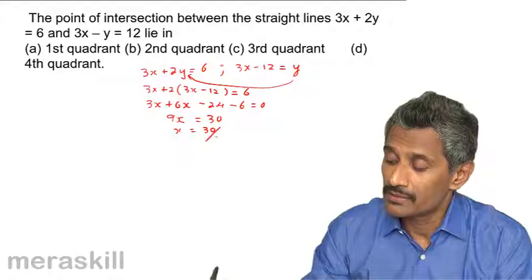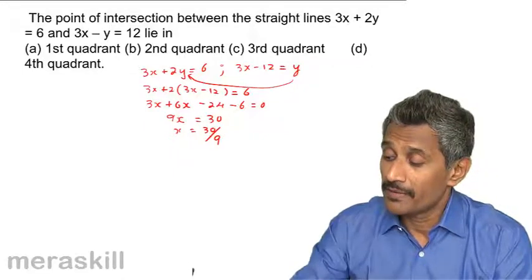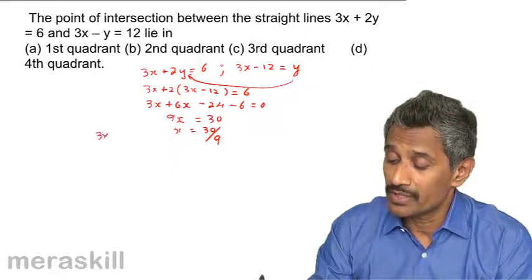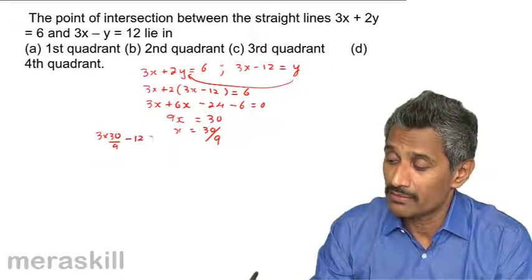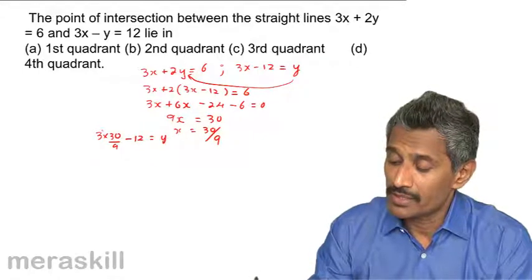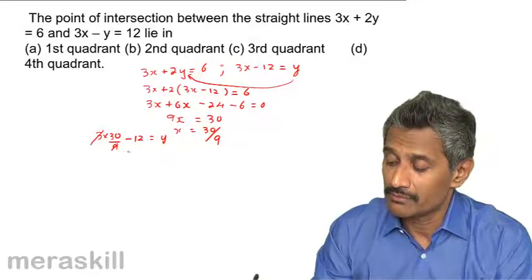So, x is 30 over 9. And this value of x, if you substitute it over here, you get 3 into 30 upon 9 minus 12 is y. So, you get 10 minus 12.